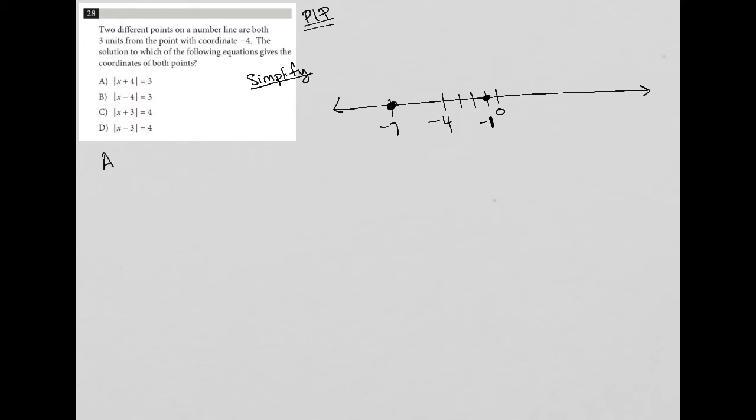All right. So I'm going to start with answer choice A and say, well, if I have the absolute value of X plus four equals three, the way that I simplify this would be that I turn this into X plus four equals three and X plus four equals negative three. And once I continue simplifying this minus four minus four minus four, what I'm left with is X equals negative one and X equals negative seven, which are the exact numbers that I want.